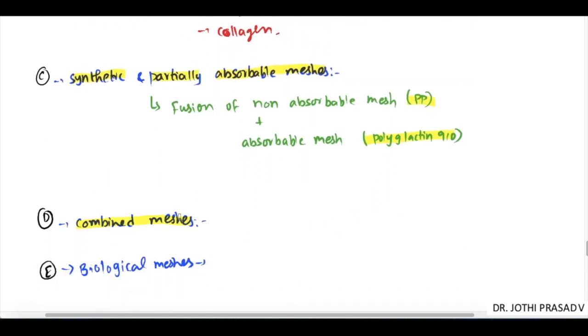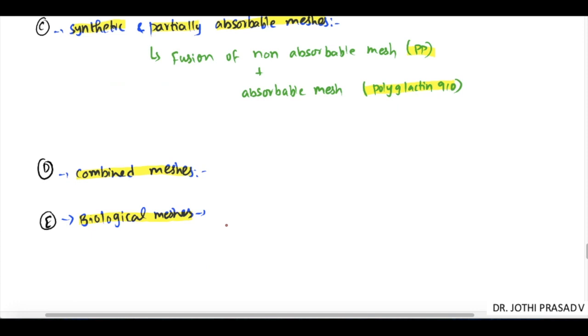Fourth is combined meshes, where we combine two meshes taking the advantages of both. Fifth is biological meshes, produced to overcome disadvantages of synthetic meshes. It involves tissue remodeling along with mesh scaffold. Examples are porcine submucosa obtained from small intestine and human acellular dermis.